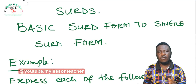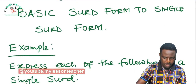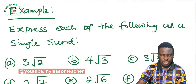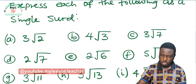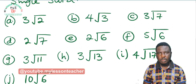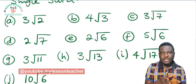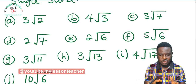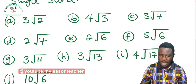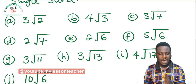So in today's class we shall be converting from the basic surd form to the single surd form, which is the opposite of what we did at the last class. We have about 10 examples where we are asked to express each of the following as a single surd. In most problems you may face in mathematics, you may want to convert from basic surd form to single surd form, so this exercise is very necessary. We are asked to express 3 root 2, 4 root 3, 3 root 7, down to 10 root 2.